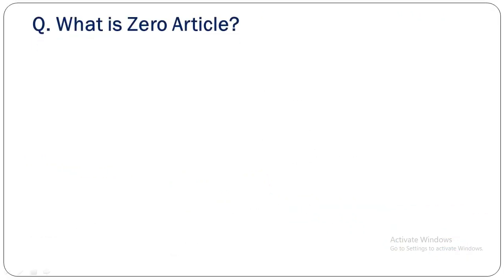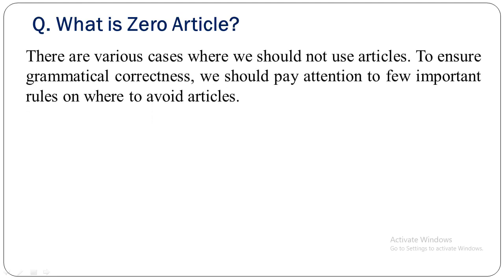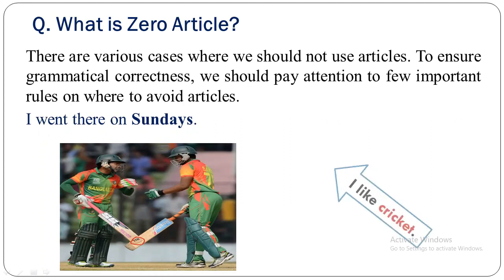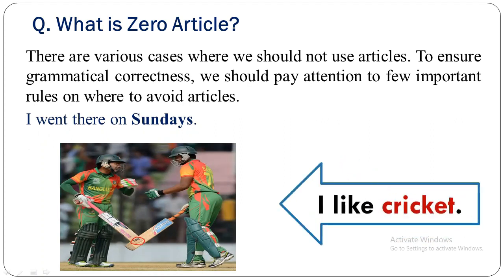What is zero article? Zero article means there is no article — where we should not use an article is called zero article. There are various cases where we should not use articles. To ensure grammatical correctness, we should pay attention to rules on where to avoid articles. For example, 'I went there on Sundays' — we cannot use any article before Sunday. Another example: 'I like cricket' — we cannot use any article before cricket because cricket is the name of a sport, so we cannot use any article before the name of a sport.